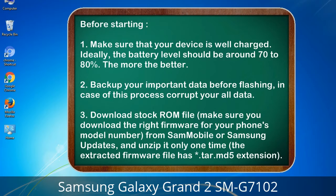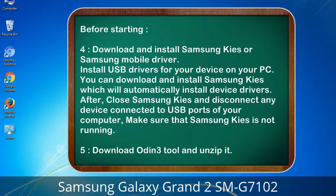3. Download the stock ROM file. Make sure you download the right firmware for your phone's model number from Sammobile or Samsung updates, and unzip it only one time. The extracted firmware file has a *.tar.md5 extension. 4. Download and install Samsung KIES or Samsung mobile driver to install USB drivers for your device on your PC. Samsung KIES will automatically install device drivers. After that, close Samsung KIES and disconnect any device connected to the USB ports of your computer. Make sure that Samsung KIES is not running.